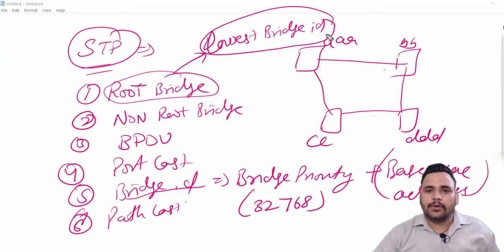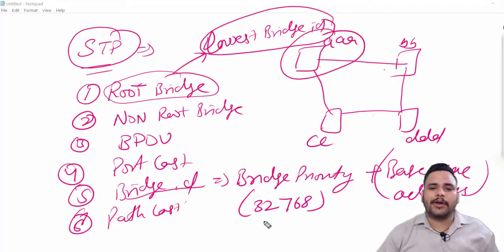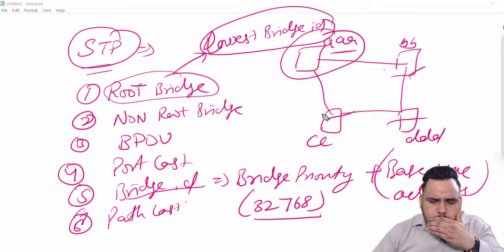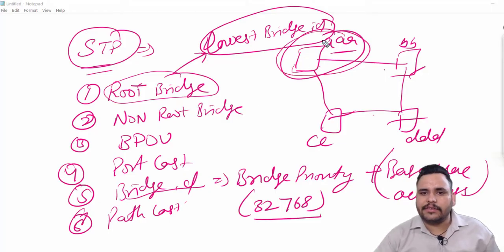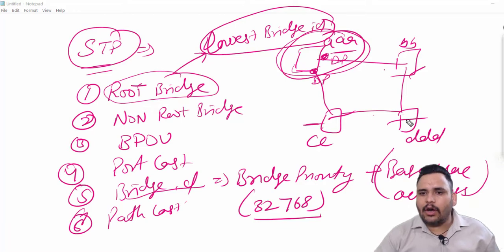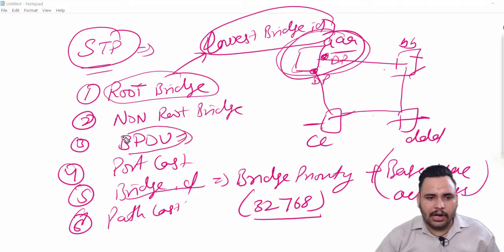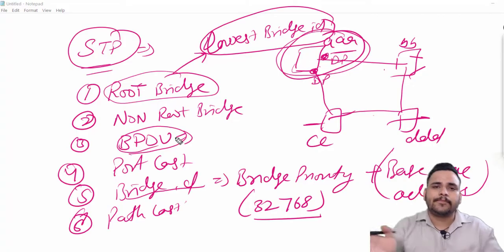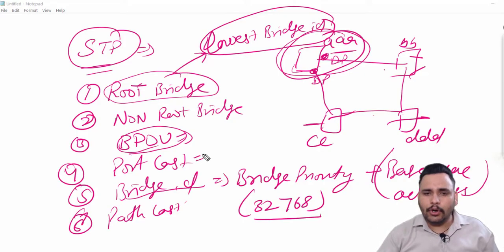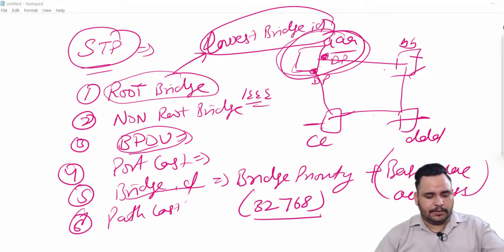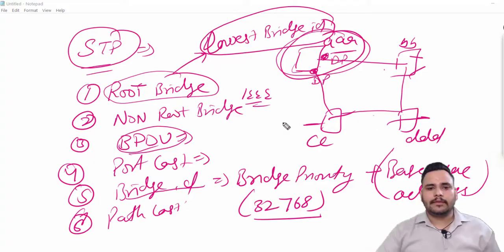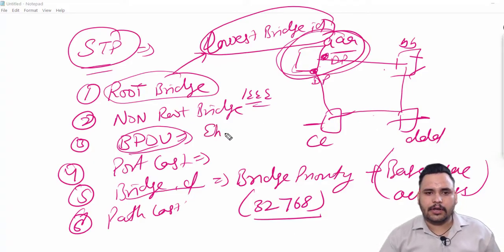Since the priority of every switch remains the same, the election is based on the lowest MAC address. So the switch with the lowest MAC address becomes the root bridge. The root bridge is the best bridge, and all ports of the root bridge are always designated ports. BPDU stands for Bridge Protocol Data Unit — it is the control information sent from one port to another. Port cost is by default defined by IEEE.